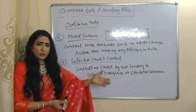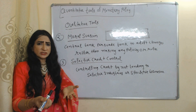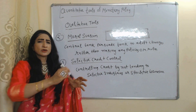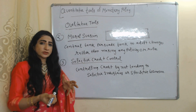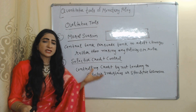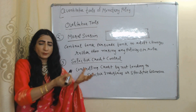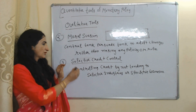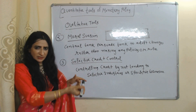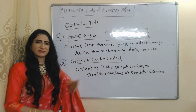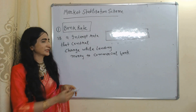The next qualitative tool is selective credit control — controlling credit by not lending to selective industries or speculative businesses. For example, the central bank tells commercial banks not to give loans to speculative businesses or industries that only think about their own profit without concern for societal welfare. The central bank may also instruct banks to give loans only to the industrial sector, agriculture sector, or non-profit organizations.